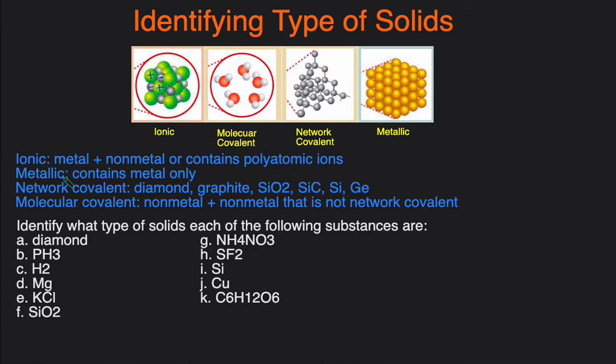Metallic solids, on the other hand, they just contain metals only, and the structure of metals—you just have metal atoms that are bonded to each other through delocalization of electrons through metallic bonds.